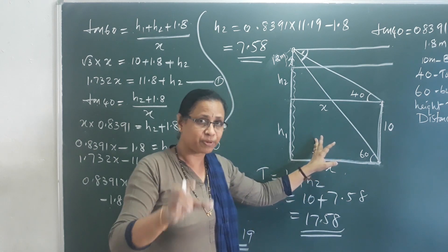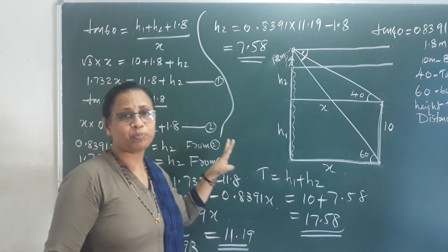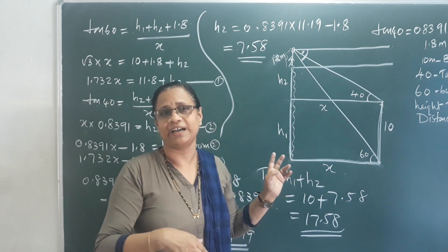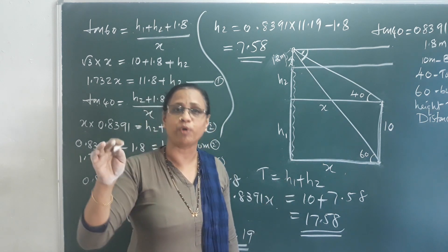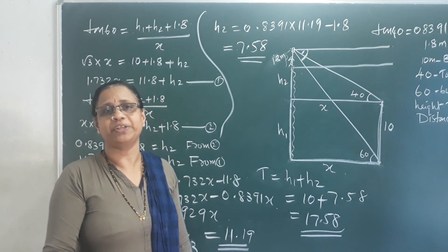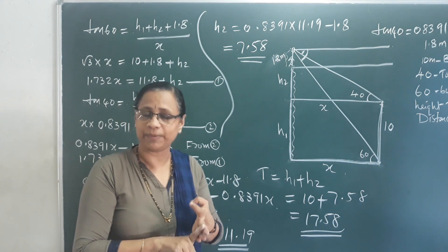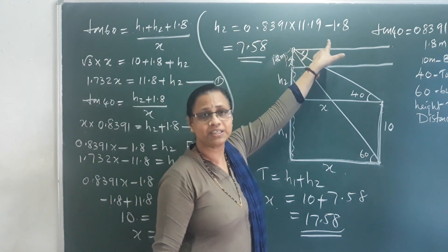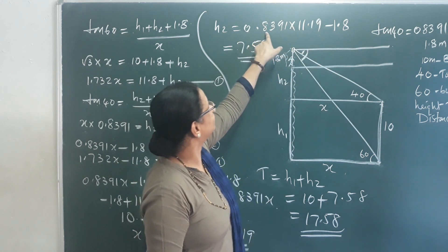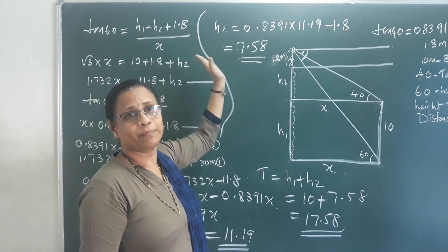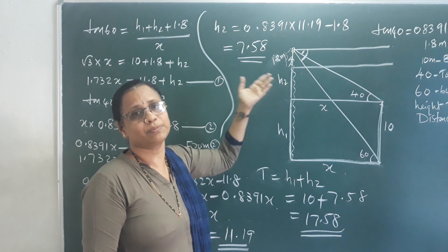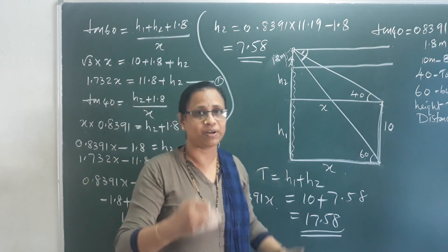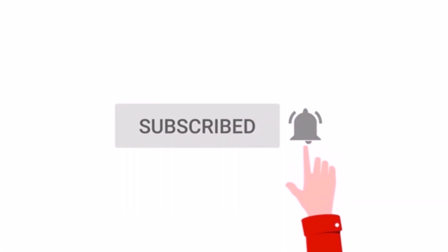This is how to solve these problems using a calculator. You should round to 2 or 3 decimal places as required in the exam. Check how many decimal places are asked in the question paper and answer accordingly. Okay, let's finish the chapter here. Thank you.